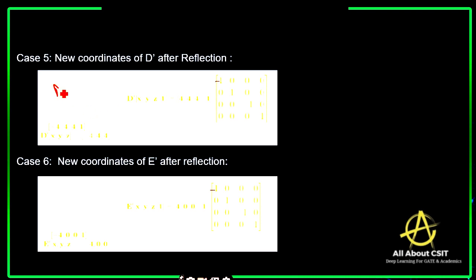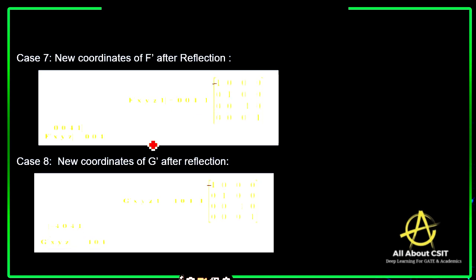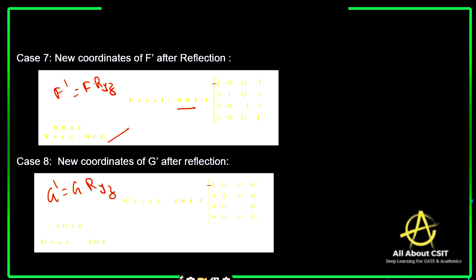E' = E × R_YZ gives the new coordinates of E'. F' = F × R_YZ — applying the reflection technique gives the new F' coordinates. G' = G × R_YZ gives the new G' coordinates. So now we have obtained all the new coordinates after reflection along the YZ plane.